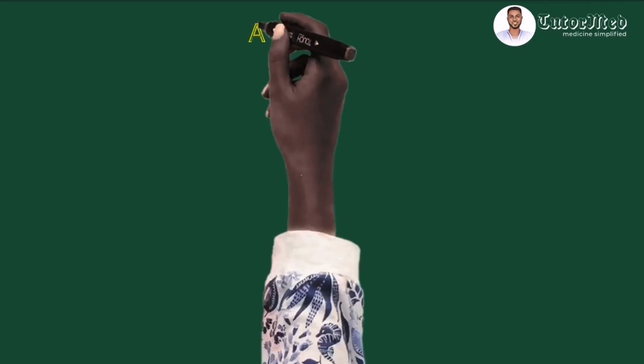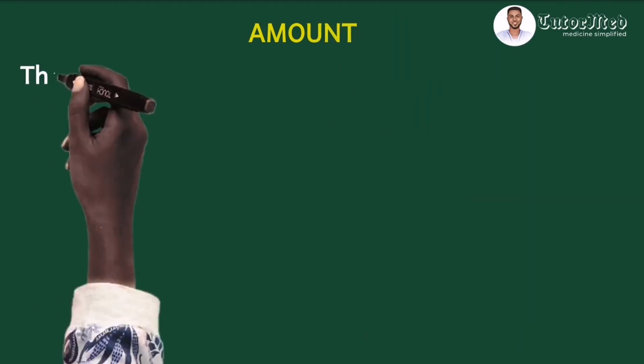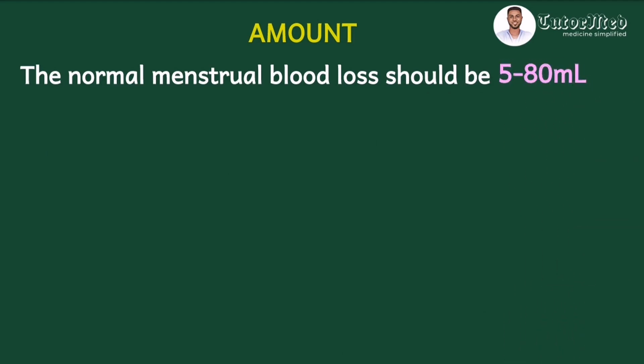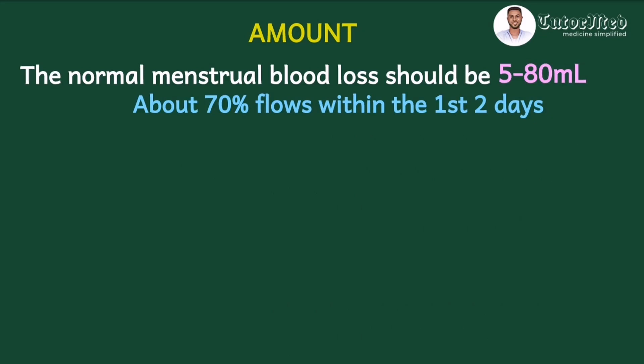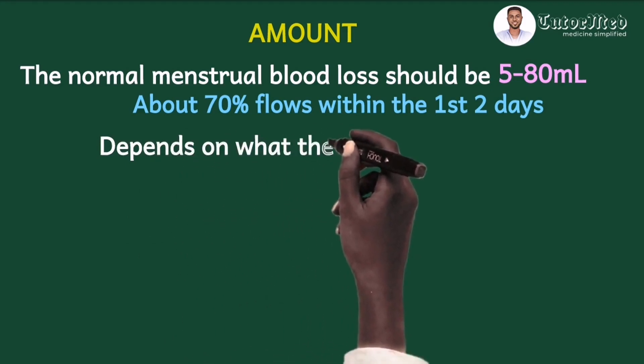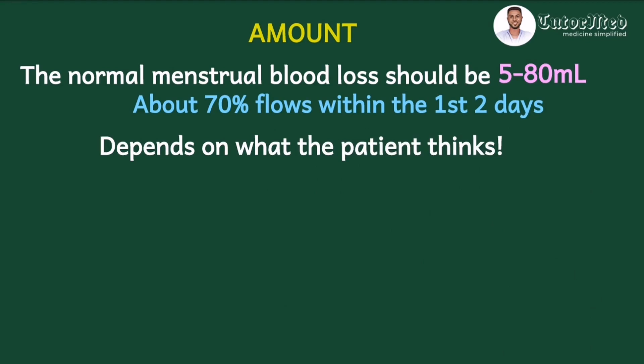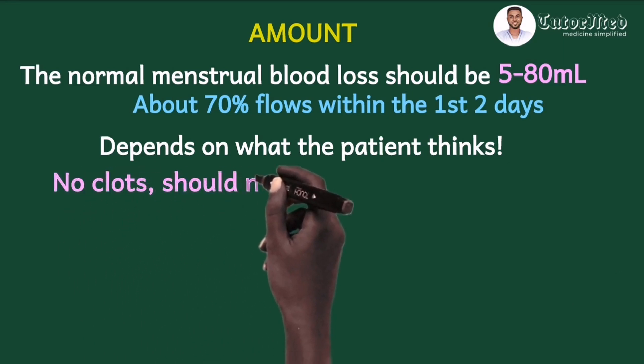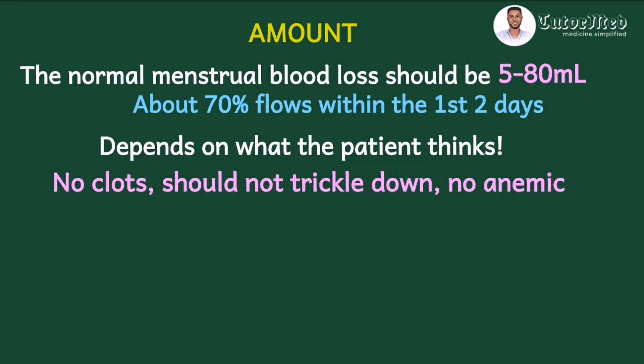A stands for the amount of menstrual blood loss. Objectively, normal menstrual blood loss should be between 5 to 80 mils, with about 70% of the blood lost within the first 2 days. However, there is no practical way for a woman to measure this. Generally, the blood loss shouldn't contain huge clots or trickle down the thigh, and it shouldn't be associated with anemic symptoms like dizziness, palpitations, or lightheadedness.